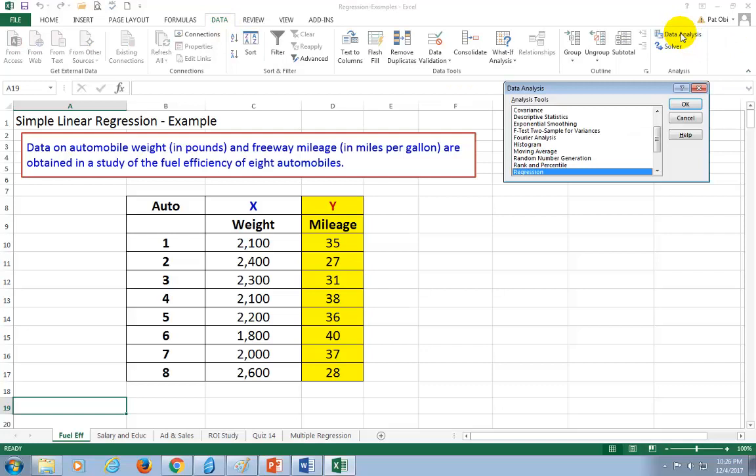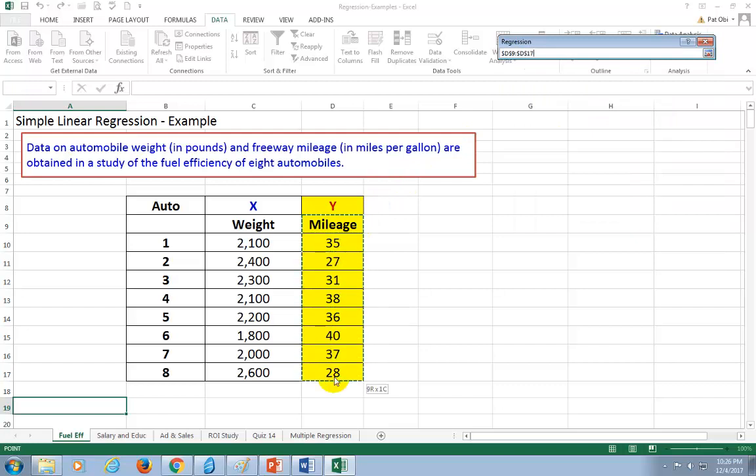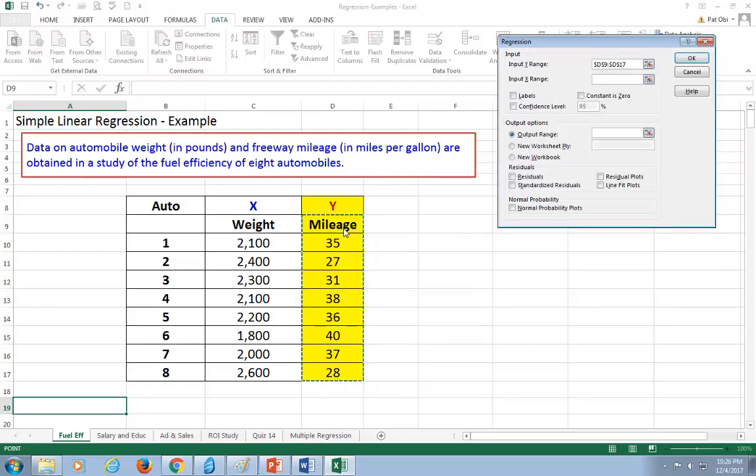I'm going to go to data analysis and this is all in alphabetical order so I click on regression and OK. For input Y range I'm going to click on the word mileage and go down with it. Excel allows one label, one row of labels on top of the data set.